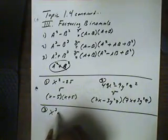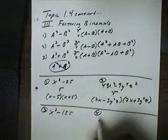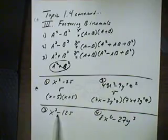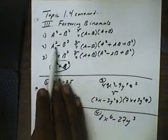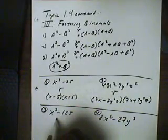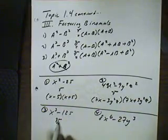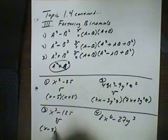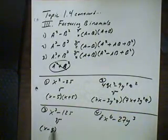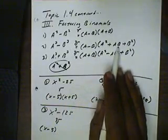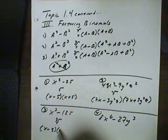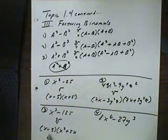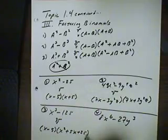Let's factor x cubed minus 125. This is a difference problem and these look like cubes, so we'll use the difference of two cubes formula. The cube root of x cubed is x, and the cube root of 125 is 5. For the second factor, A squared is x squared, A times B gives plus 5x, and B squared gives plus 25. So the factored form is (x minus 5)(x squared plus 5x plus 25).